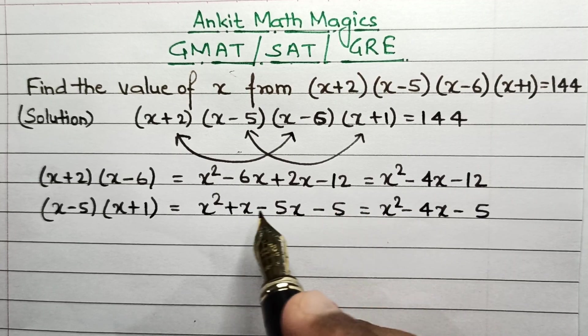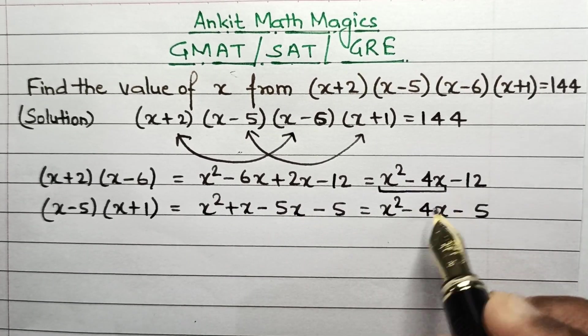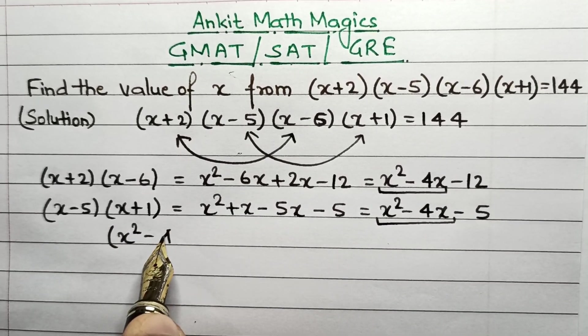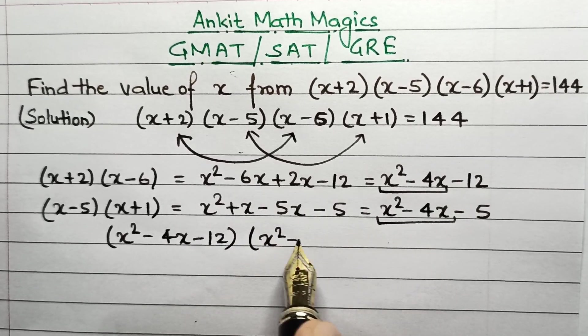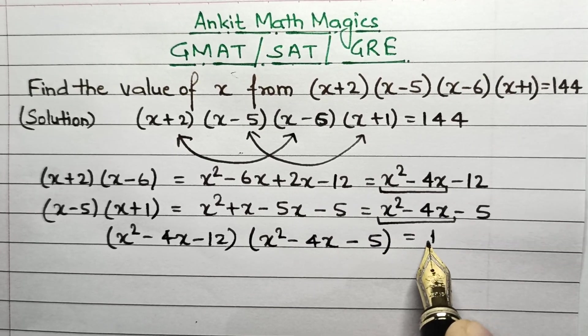So as you can see, we have done the grouping on the simple concept that after multiplying, at least some part of the equation should be the same. So now the original question can be written as (x² - 4x - 12)(x² - 4x - 5) = 144.